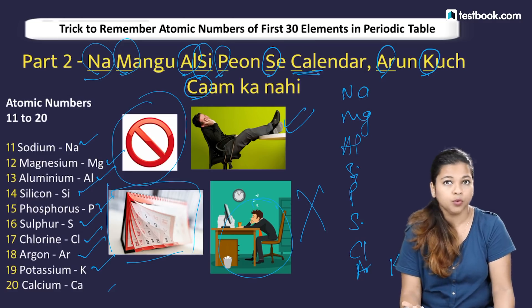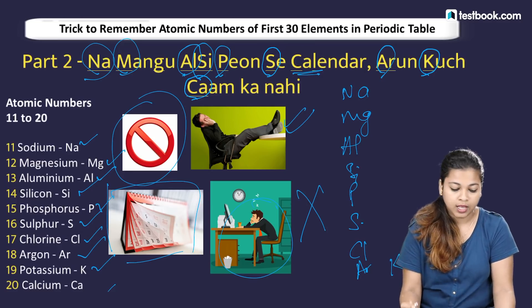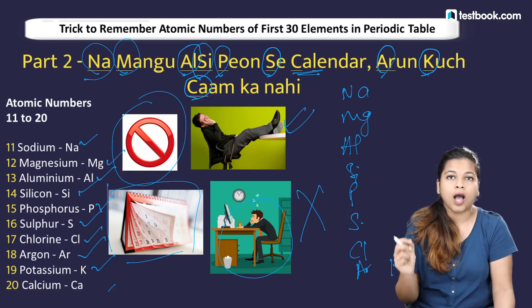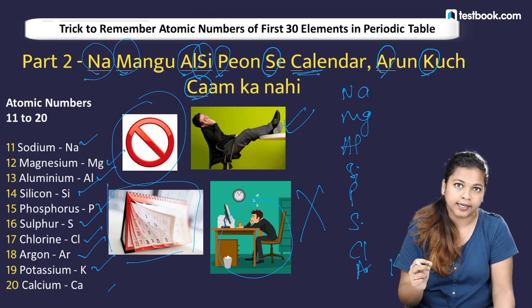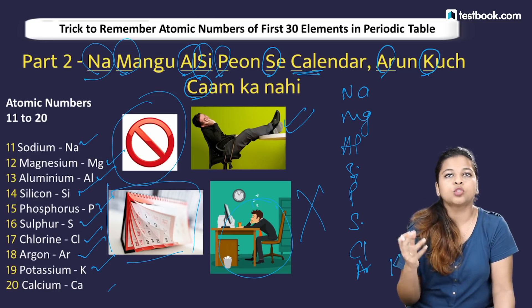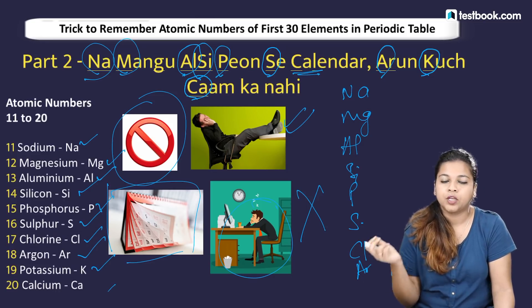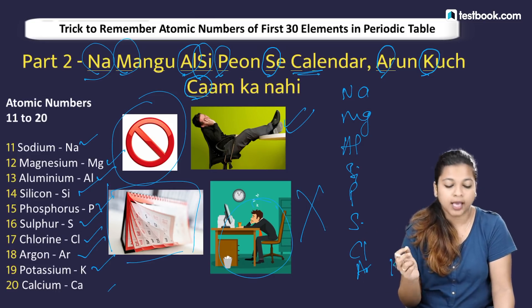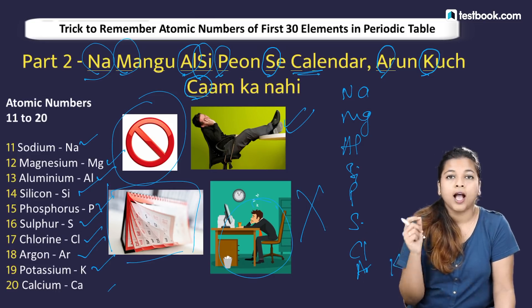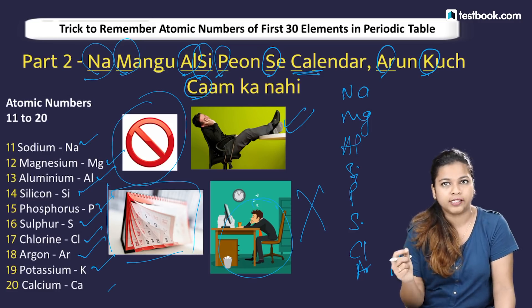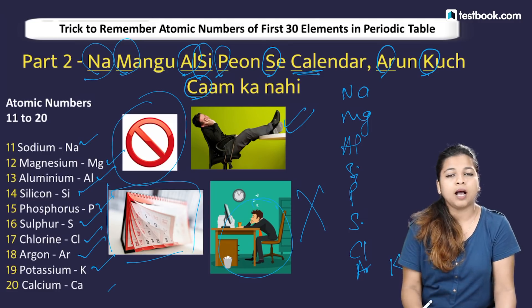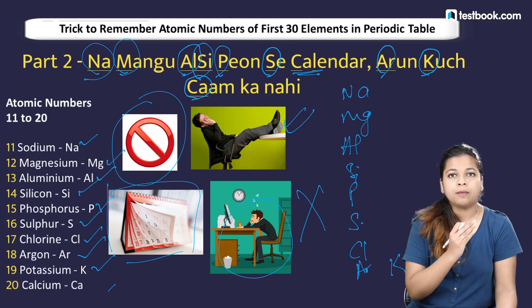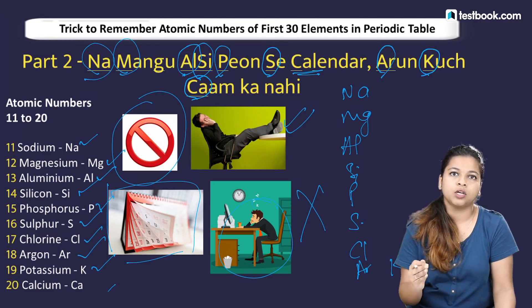So to remember atomic numbers 11 to 20, repeat: 'Na maangu, Al-Si, pyoon se, calendar, Arun kuch kaam ka nahi.' Now let's move on to atomic numbers 21 to 30.